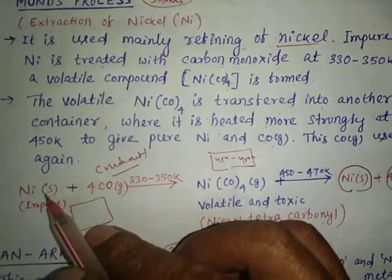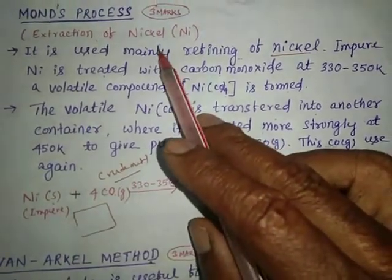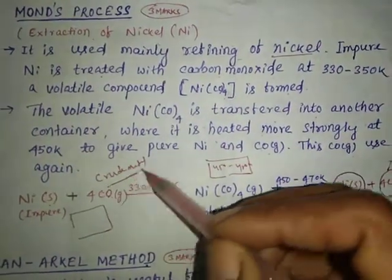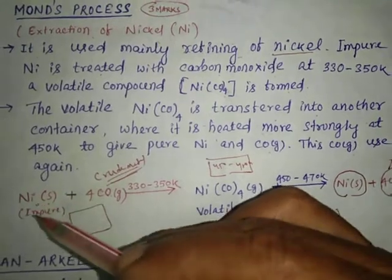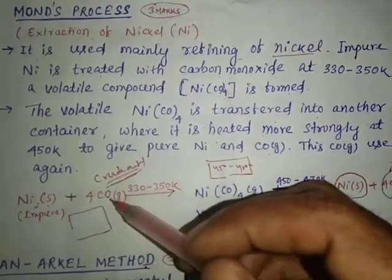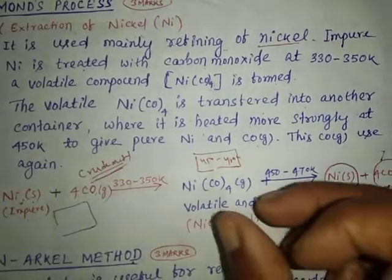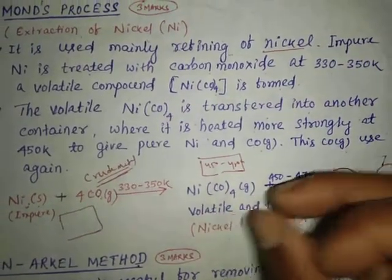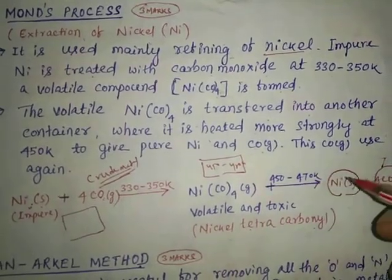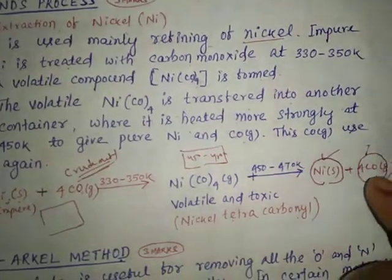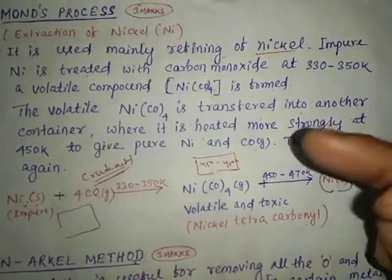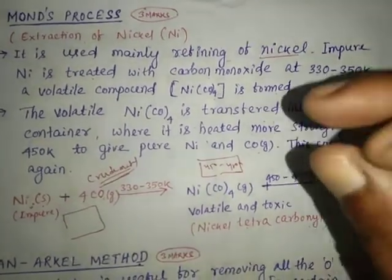So we can use this special method of refining process. We can use this method on crude metal. First, we take impure nickel and react it with carbon monoxide gas to form a coordinate complex compound. Then we decompose that complex compound to obtain pure nickel and carbon monoxide gas. So the Mond's Process is very important.